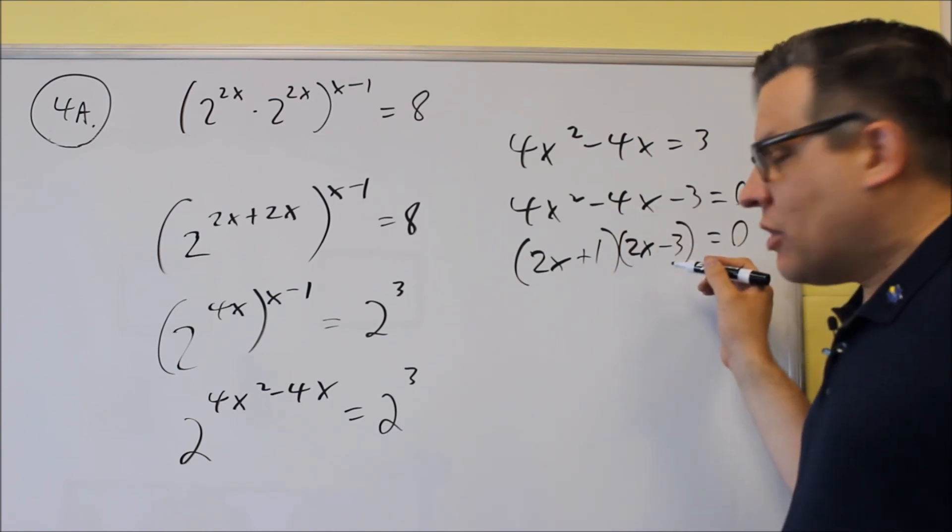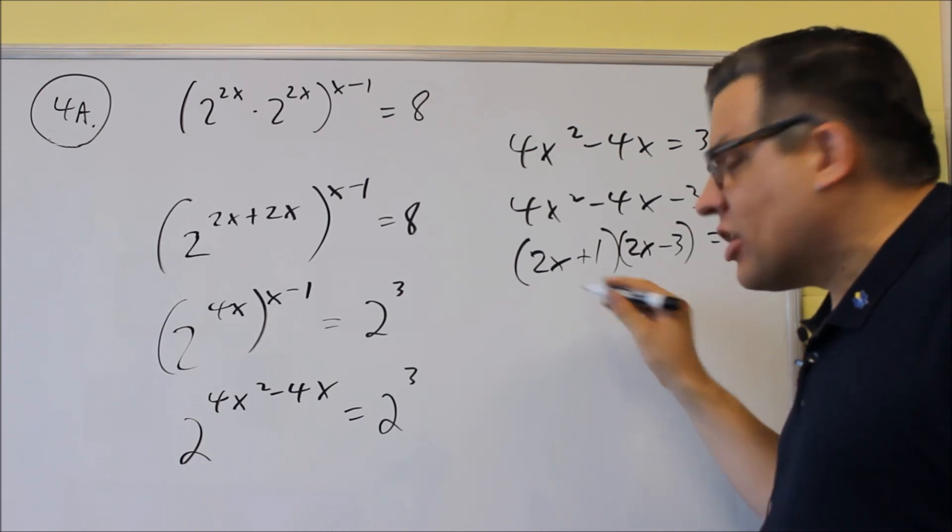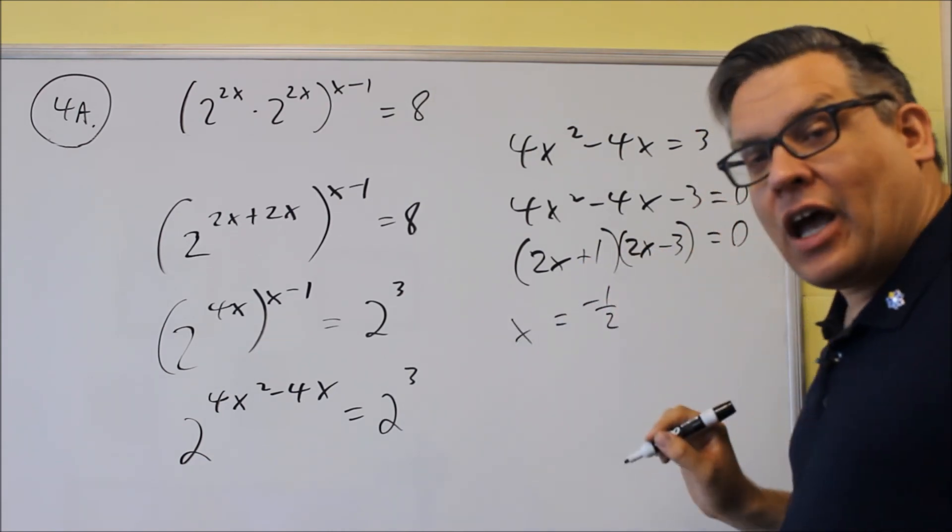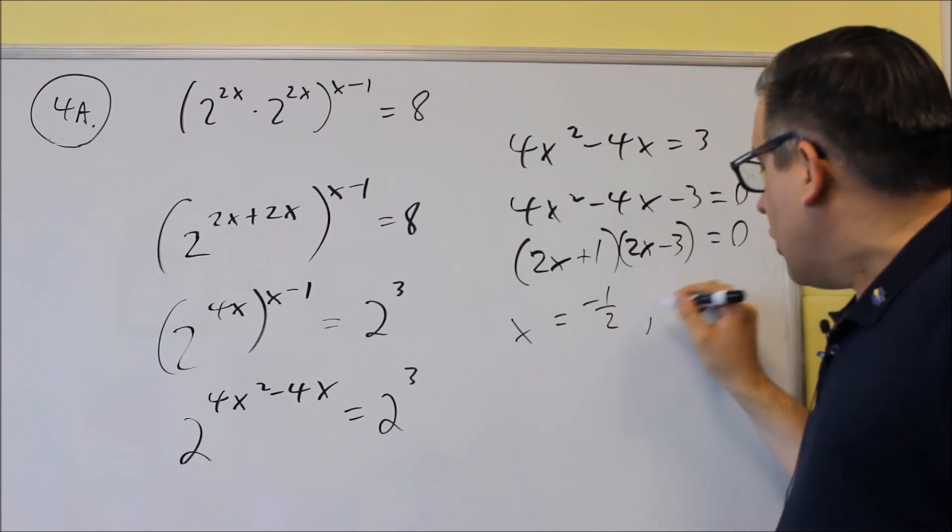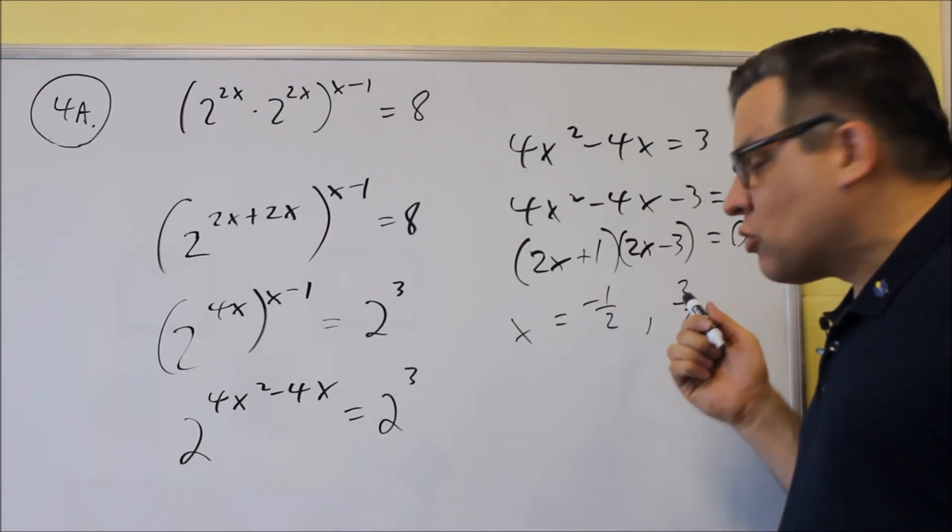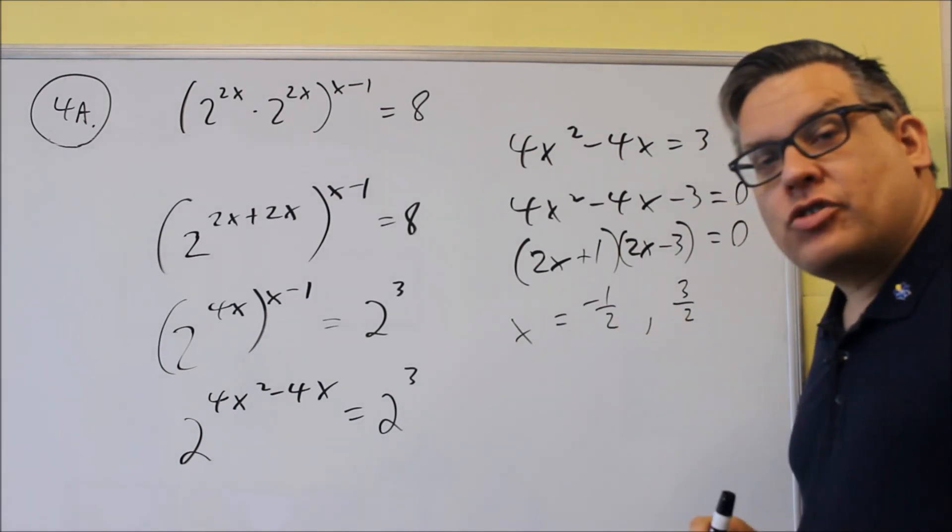And so that's correctly factored, and now I'm just going to set both those individually equal to 0, and when you do that, you get negative 1 half, and then the other one you get is 3 halves. Both of these will work, and so you would have two answers on this one.